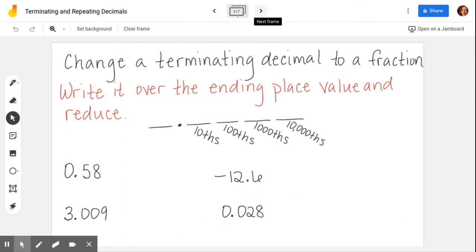So I always think of it as the Terminator movies. The Terminator was about stopping someone, right? So in a terminating decimal, the decimal stops. There's an ending to it. It doesn't go on forever. It doesn't repeat.